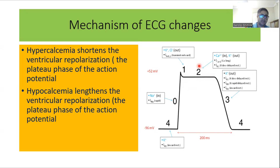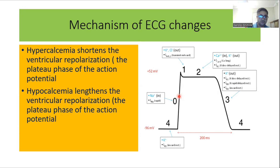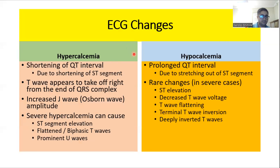In cases of hypercalcemia, the electrical current is conducted very fast, so there is shortening of ventricular depolarization, leading to shortening of the QT interval. Whereas in hypocalcemia, this phase is prolonged, leading to a prolonged QT interval. This slide summarizes the ECG changes in hyper- and hypocalcemia.